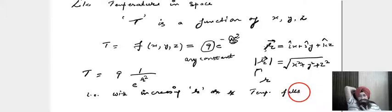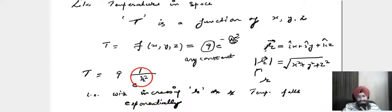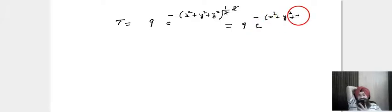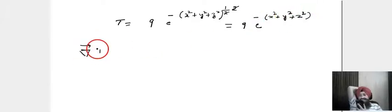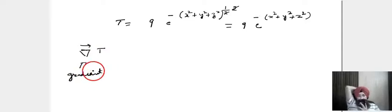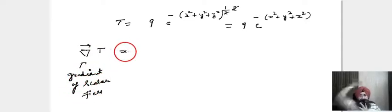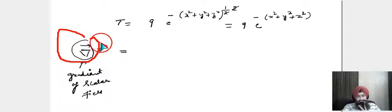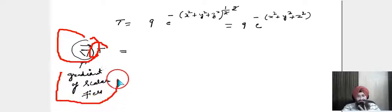With increasing R, the temperature falls exponentially. So T equals 9e raised to the power of minus R squared, where R is the magnitude. Del T — the gradient of the scalar function — uses the Del operator, which is a space operator applied to the scalar field T.